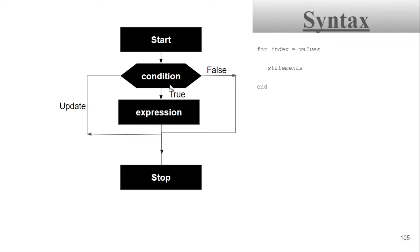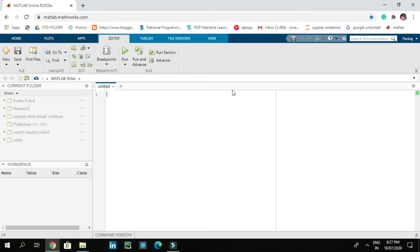In the flowchart, first we start, then we check the condition. If the condition is false, it goes directly to stop — same as a while loop. If condition is true, it executes the expression and repeats the same procedure until the condition becomes false. In the syntax, we write 'for', then 'index = values', then the statement. When the condition is true it executes the statement repeatedly; when false it ends the for loop.